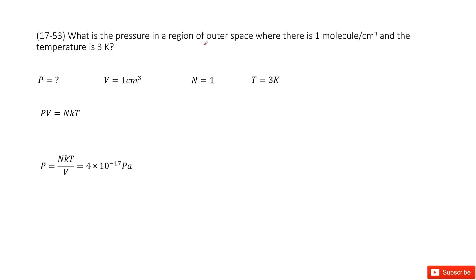We can see in the outer space, we need to find pressure. And in this outer space, we have one molecule per centimeter cube. And the temperature is given 3 Kelvin. So now we just list what is given.